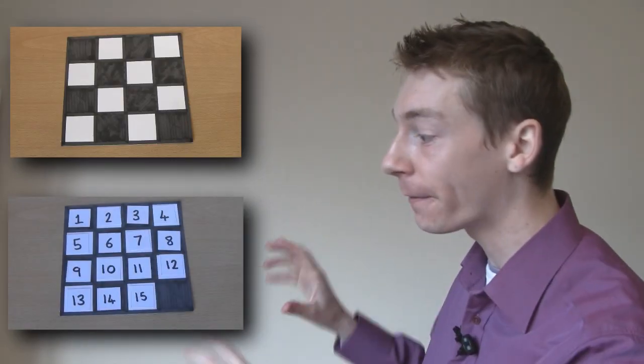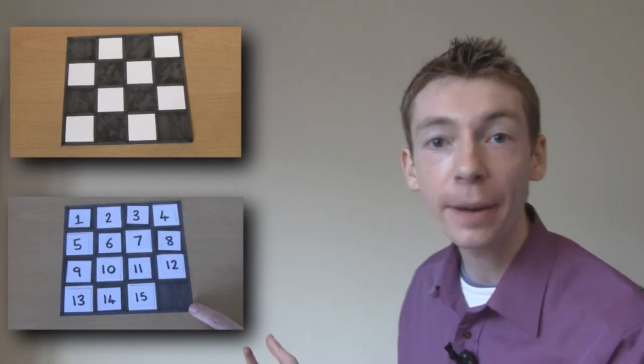It was proved to be impossible in 1879 by Johnston and Story. What we're going to do is colour the 4x4 grid like a chessboard. The blank starts off in the bottom right corner on the black square.